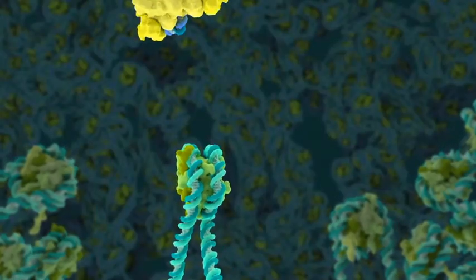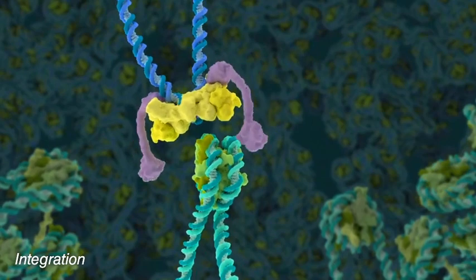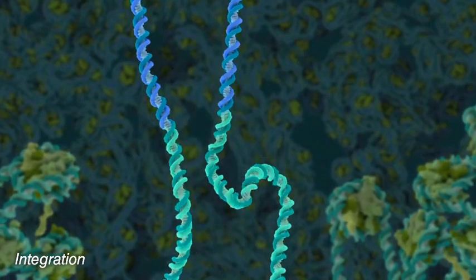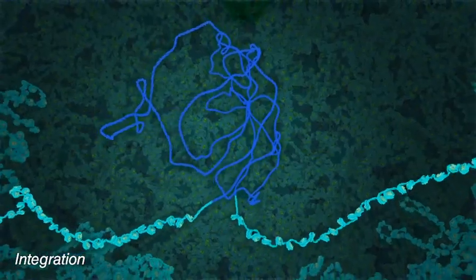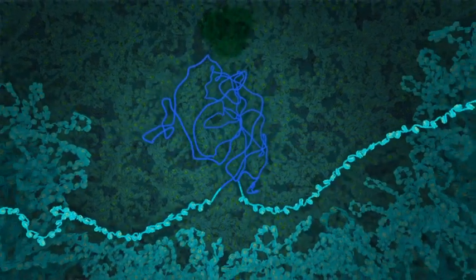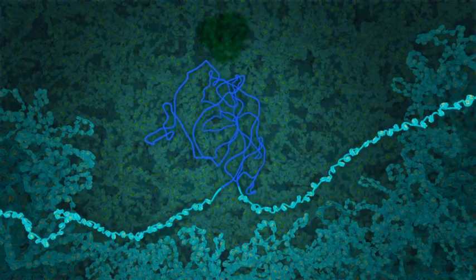Inside the nucleus, integrase binds to cellular DNA, cuts it, and inserts the viral DNA. The viral DNA, or provirus, can become active immediately or remain dormant for days, weeks, or even years.